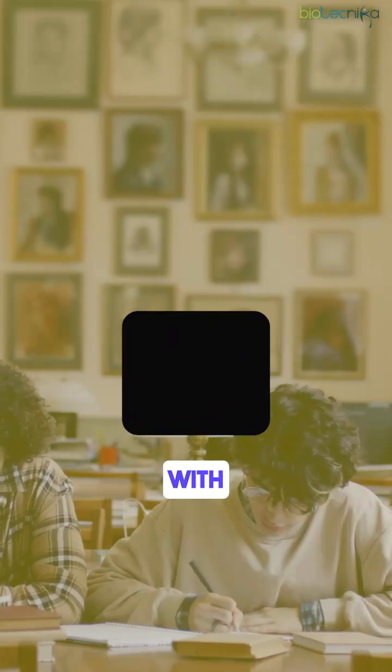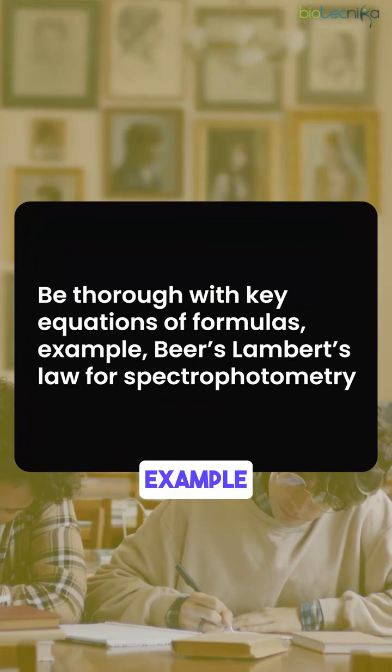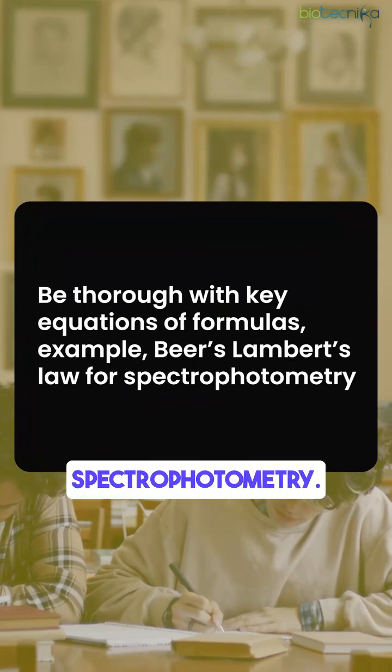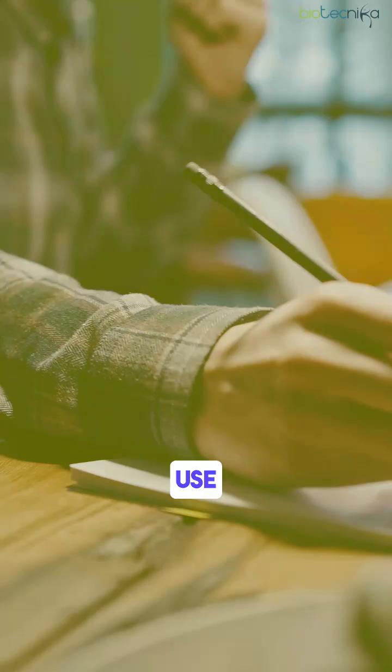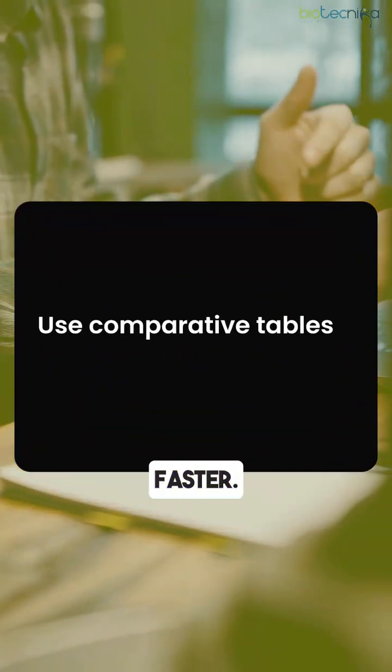Fifth, be thorough with key equations and formulas — for example, Beer-Lambert's law for spectrophotometry. Sixth, use comparative tables to understand and learn the techniques faster.